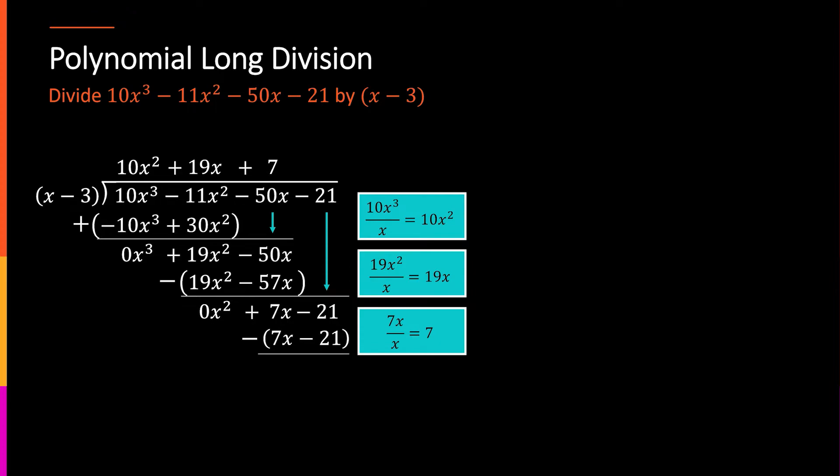then subtract that piece off. So, now I have 7x minus 7x is zero, negative 21 minus minus 21, also zero. And as before, this is my remainder, because I dropped the last piece down, so what's left over is a remainder, which in this case is zero.